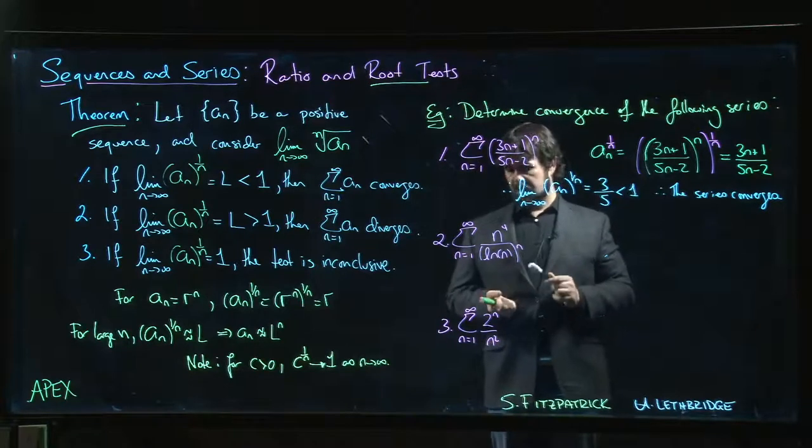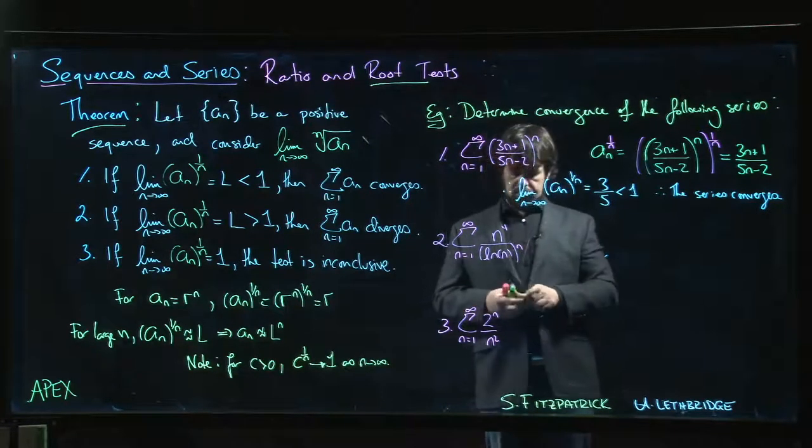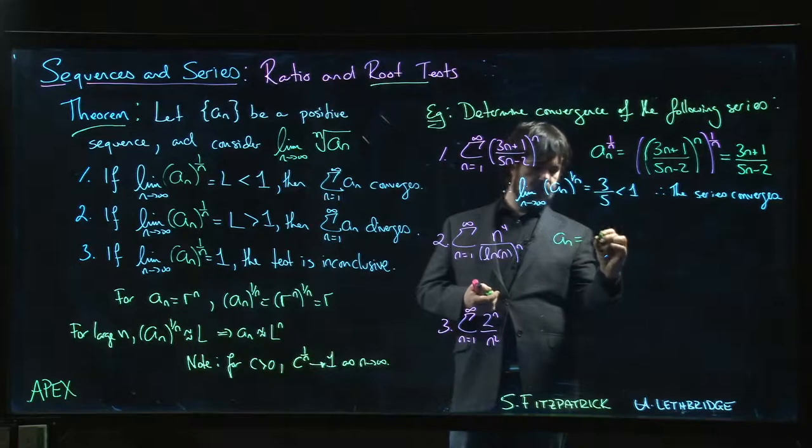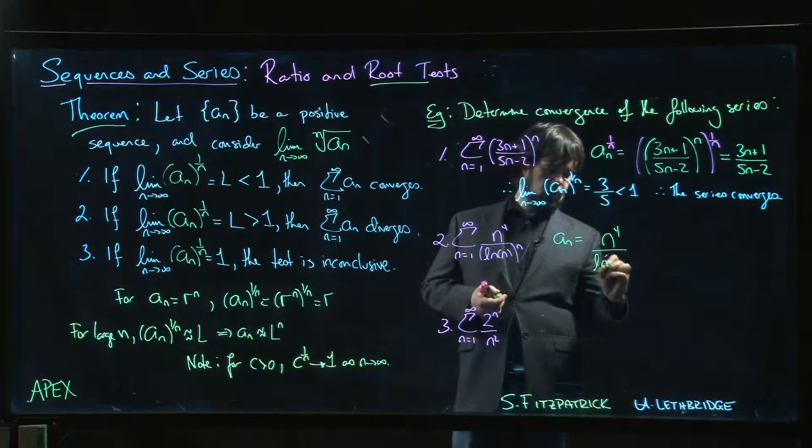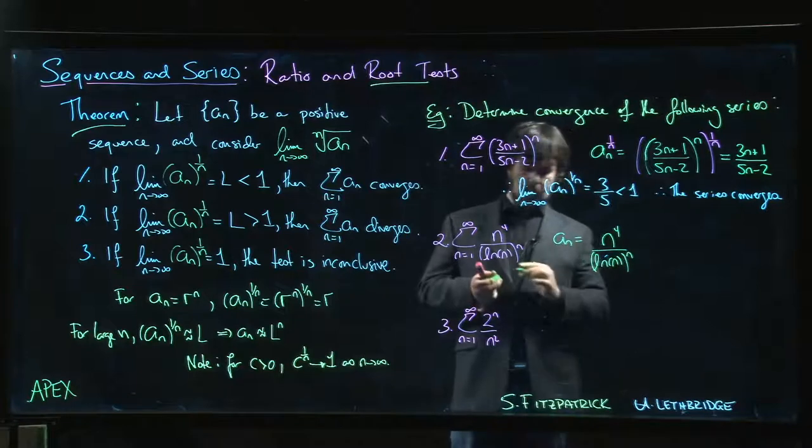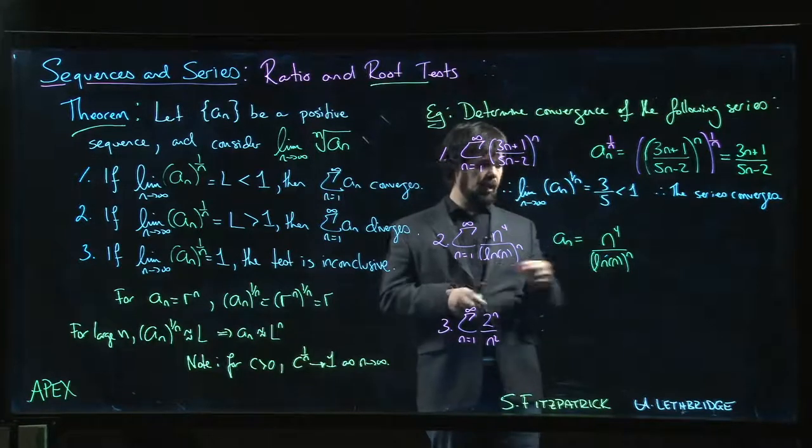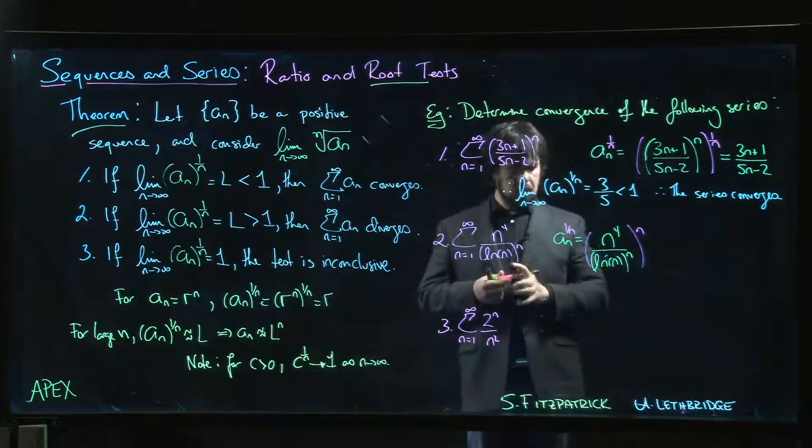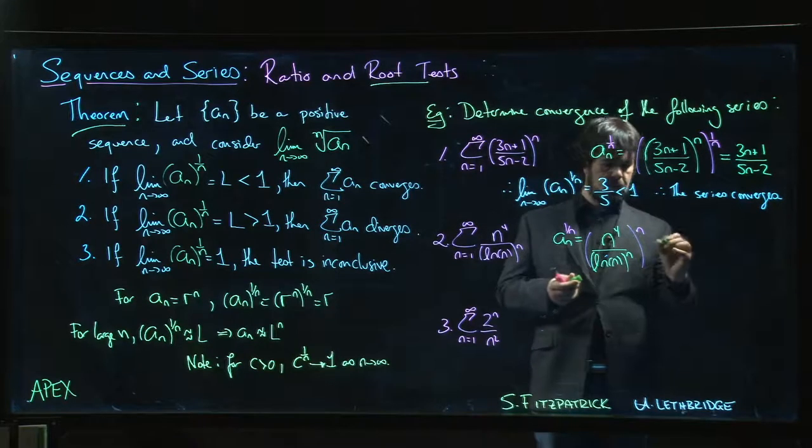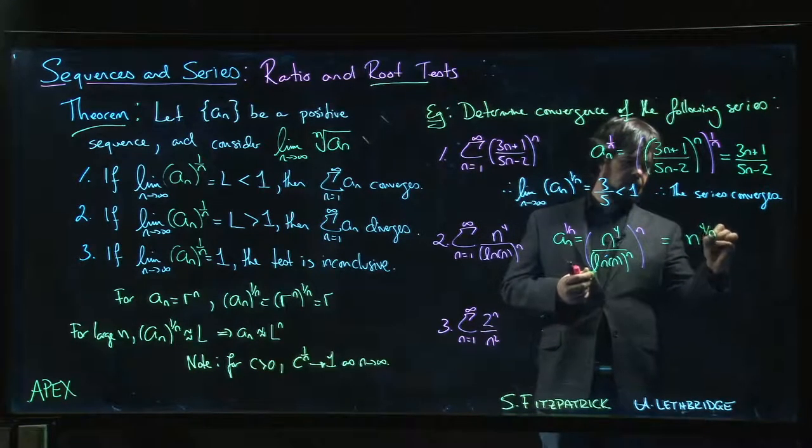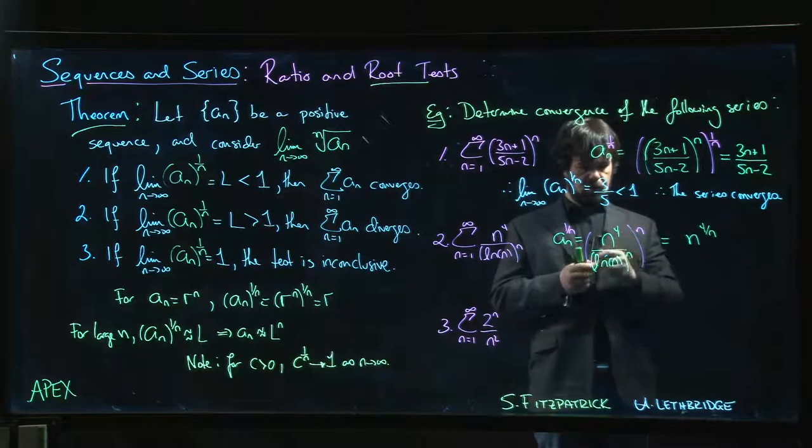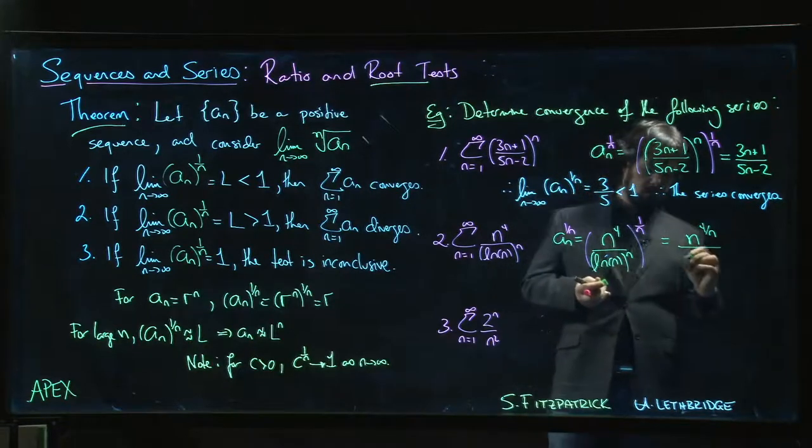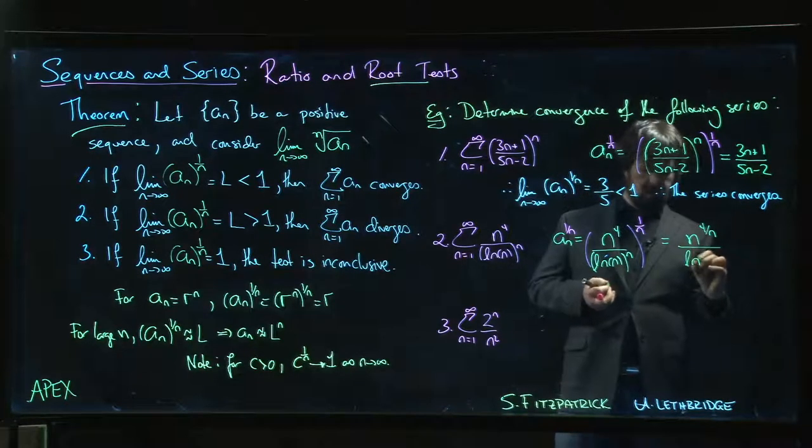Okay, if we look at the next one, a_n we have n to the fourth over log n to the nth power. So again we're going to raise that to the power 1 over n. And what we get is we get n to the 4, oops sorry, 1 over n, let's be careful here.